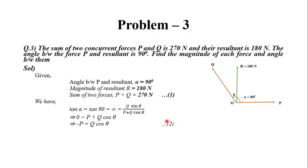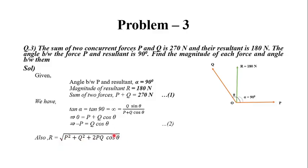Now, the resultant expression as per the parallelogram law is R = √(P² + Q² + 2PQ cosθ). Since Q cosθ = −P, we substitute Q cosθ = −P into this expression.